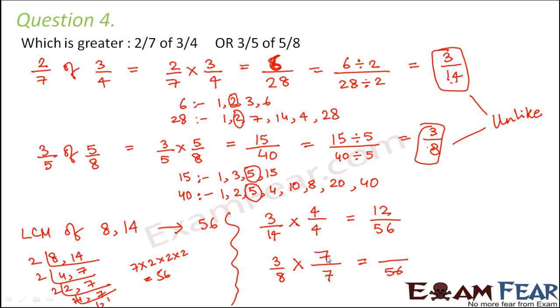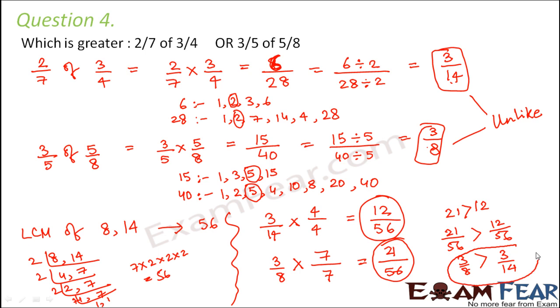8 into 7 is 56, so we multiply the numerator also with 7. So we get 21 by 56. Now it is very easy to compare these two. One value is 12 by 56 and the other is 21 by 56. Now we know that 21 is greater than 12, therefore 21 by 56 is greater than 12 by 56. So 3 by 8 is greater than 3 by 14.